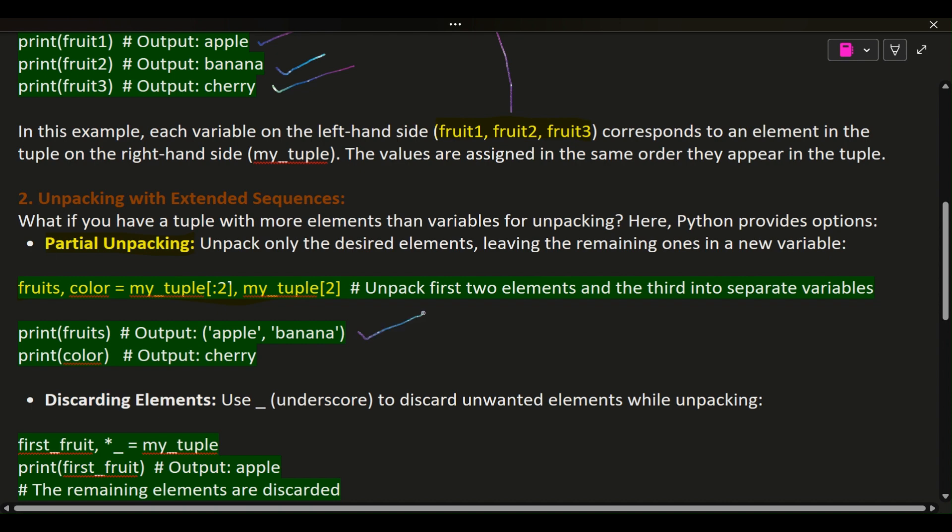print(fruits) # Output: ('apple', 'banana') print(color) # Output: cherry